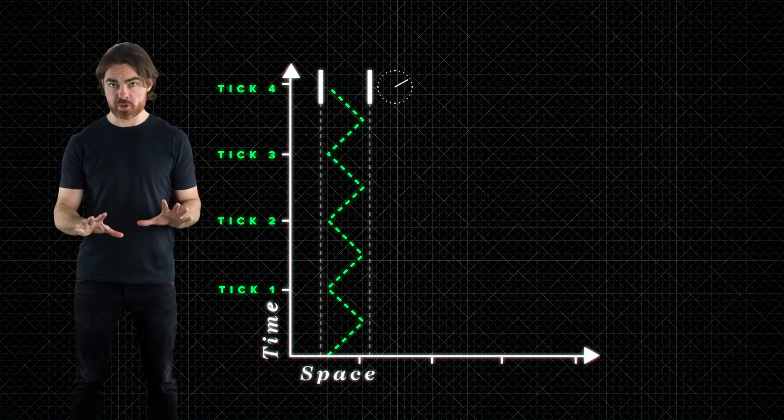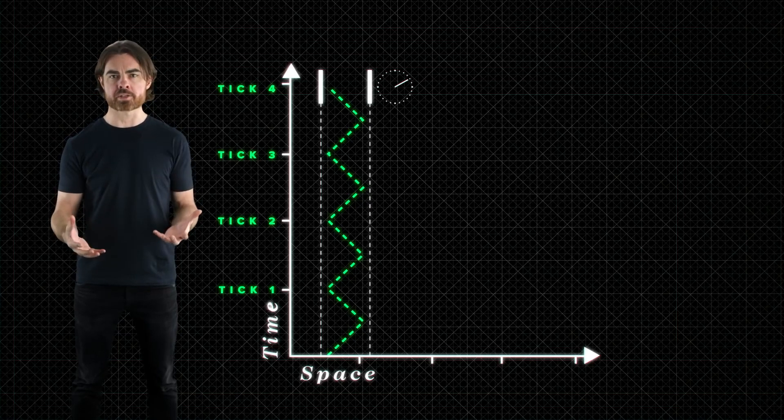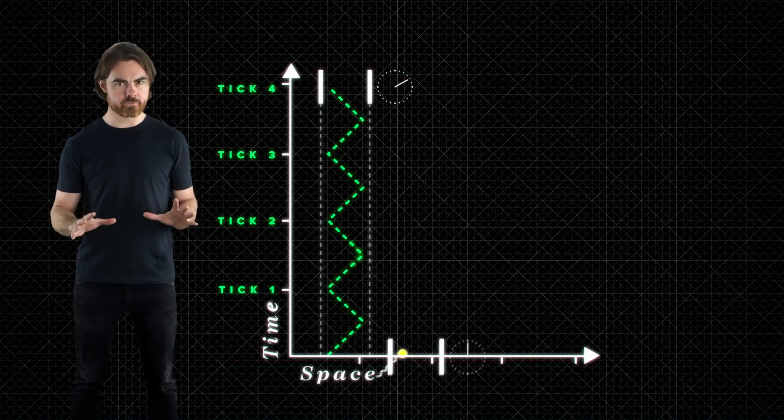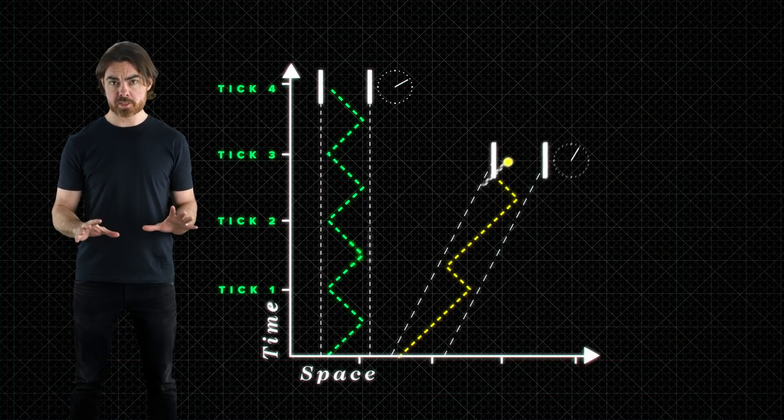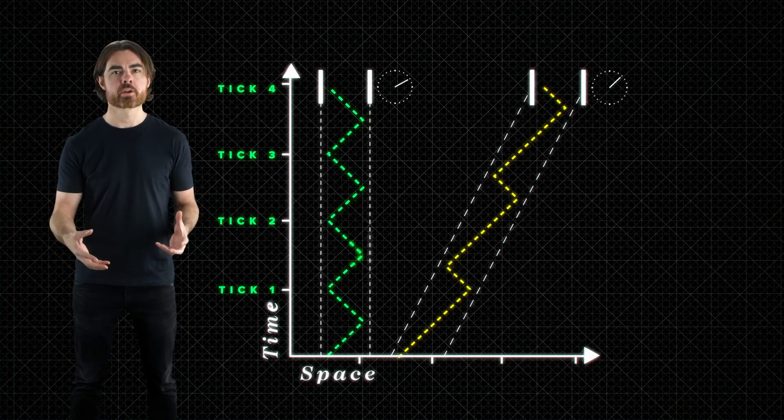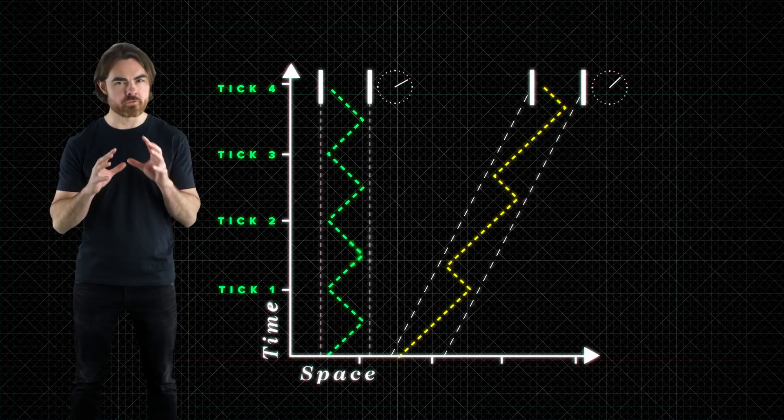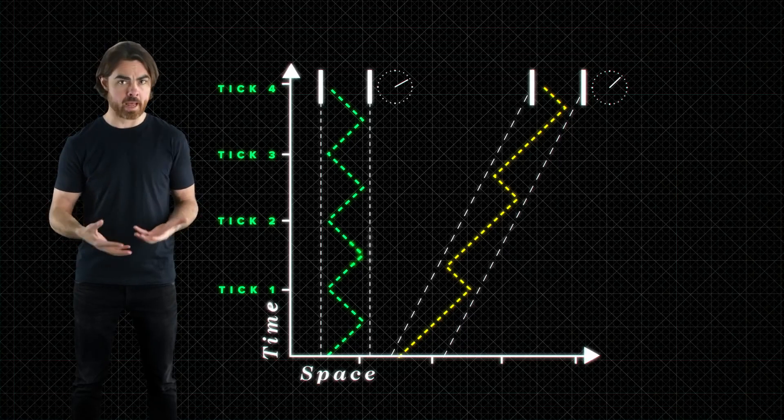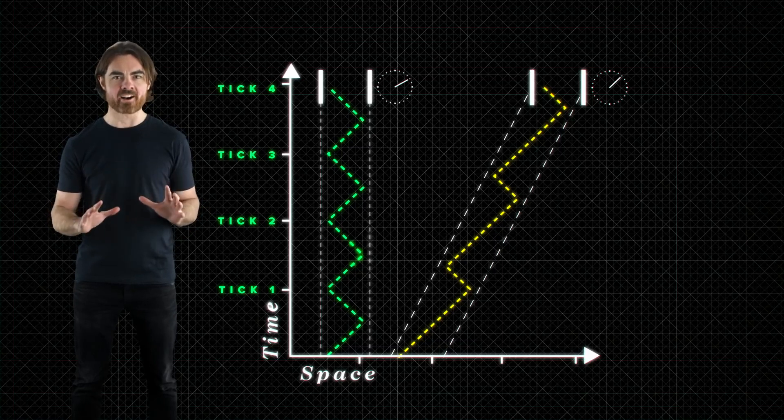However, the internal photon still has to travel those 45 degree light-like paths, because photons can only travel at the speed of light. A second photon clock, with a constant speed with respect to the first, travels a steeper, time-like path. This is where that whole invariant speed of light thing gets really interesting. Regardless of the speed of that clock, the internal photons always do those 45 degree paths back and forth. But check it out.